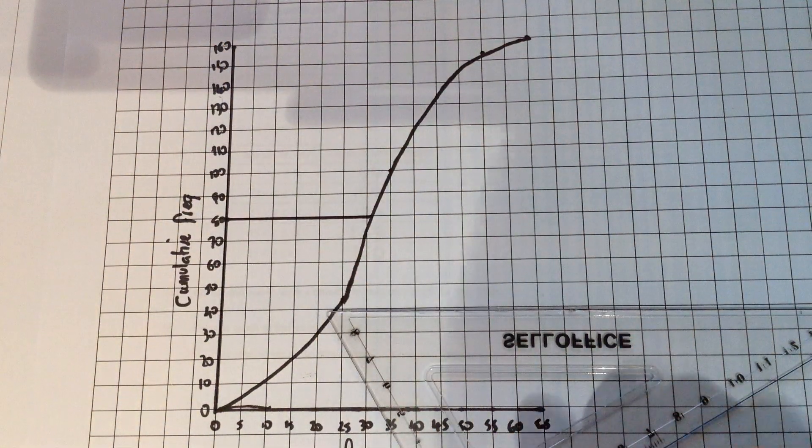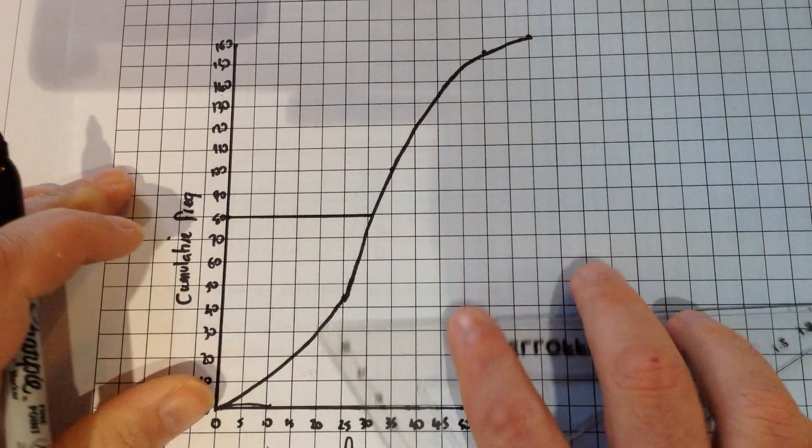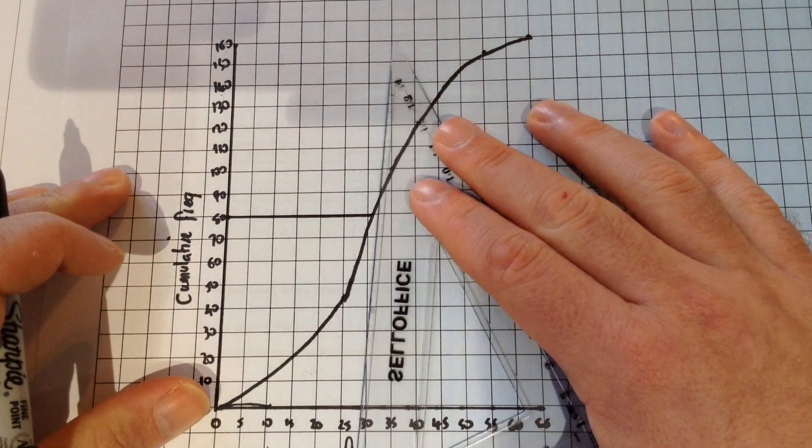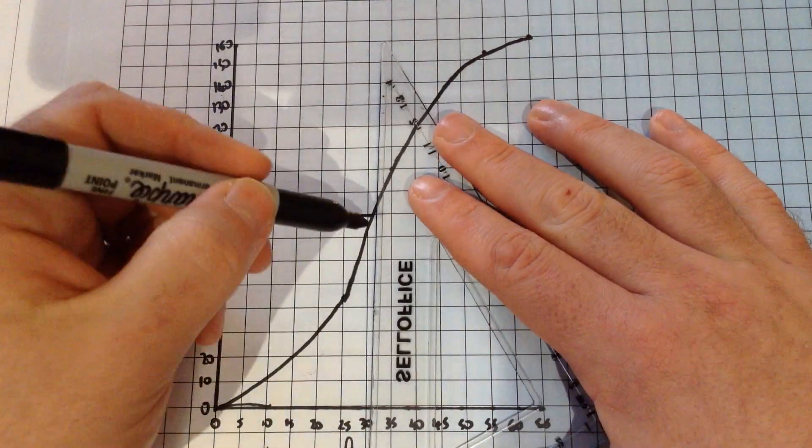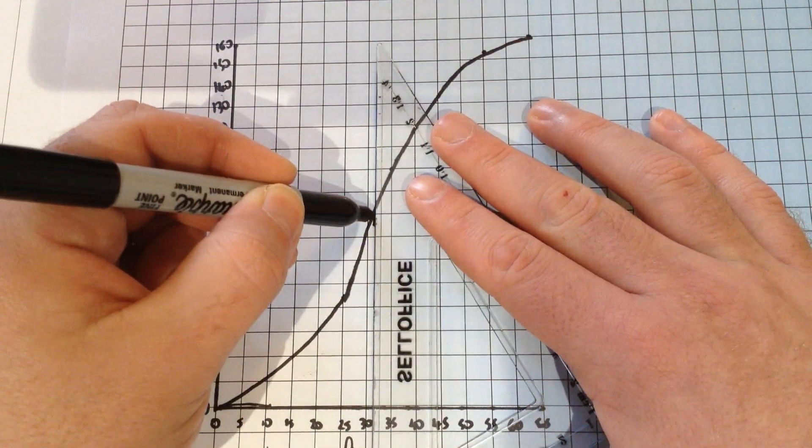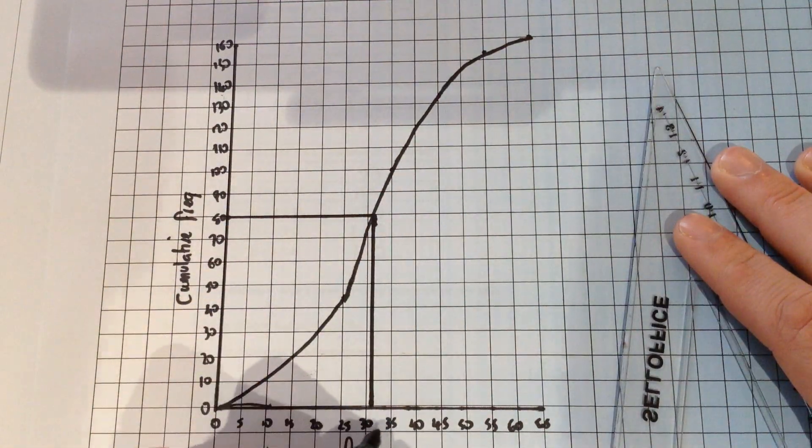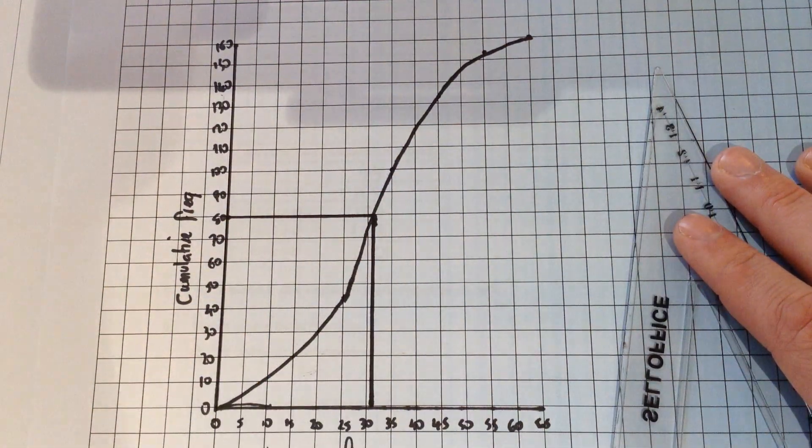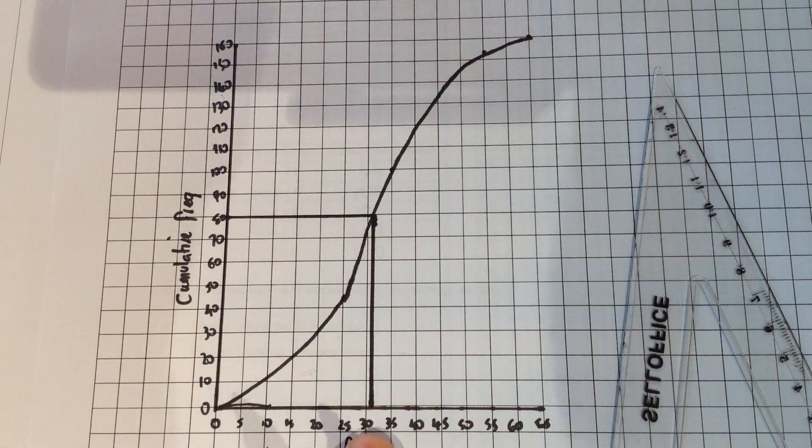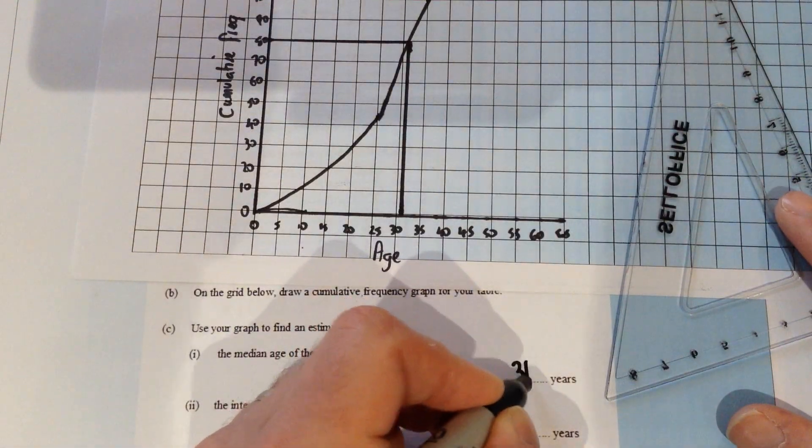In order to read off the median, we go to 80 on the cumulative frequency scale. Draw yourself a line using a ruler; make sure you're actually drawing it on, don't just read it off, until you hit the curve. And then, as accurately as you possibly can, wherever it hits the curve, draw yourself a line going straight down, and at whatever point it hits the axis, that is going to be the median. So in this case it would be 31. So we would say here that the median age is 31.